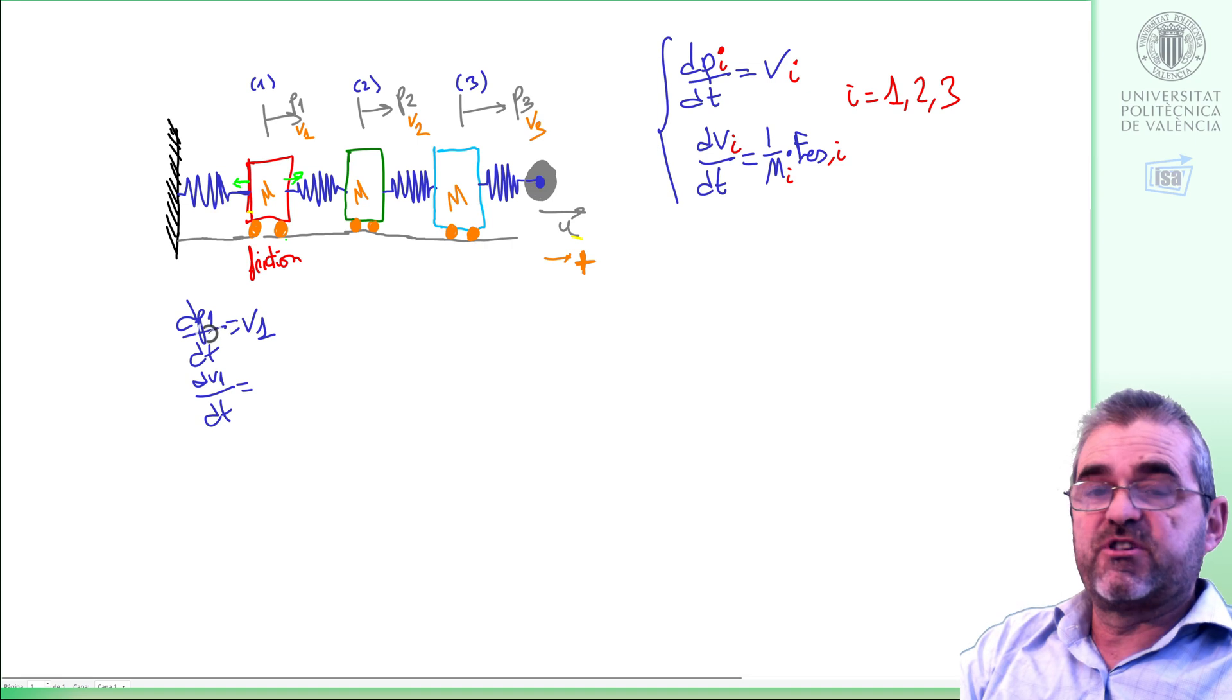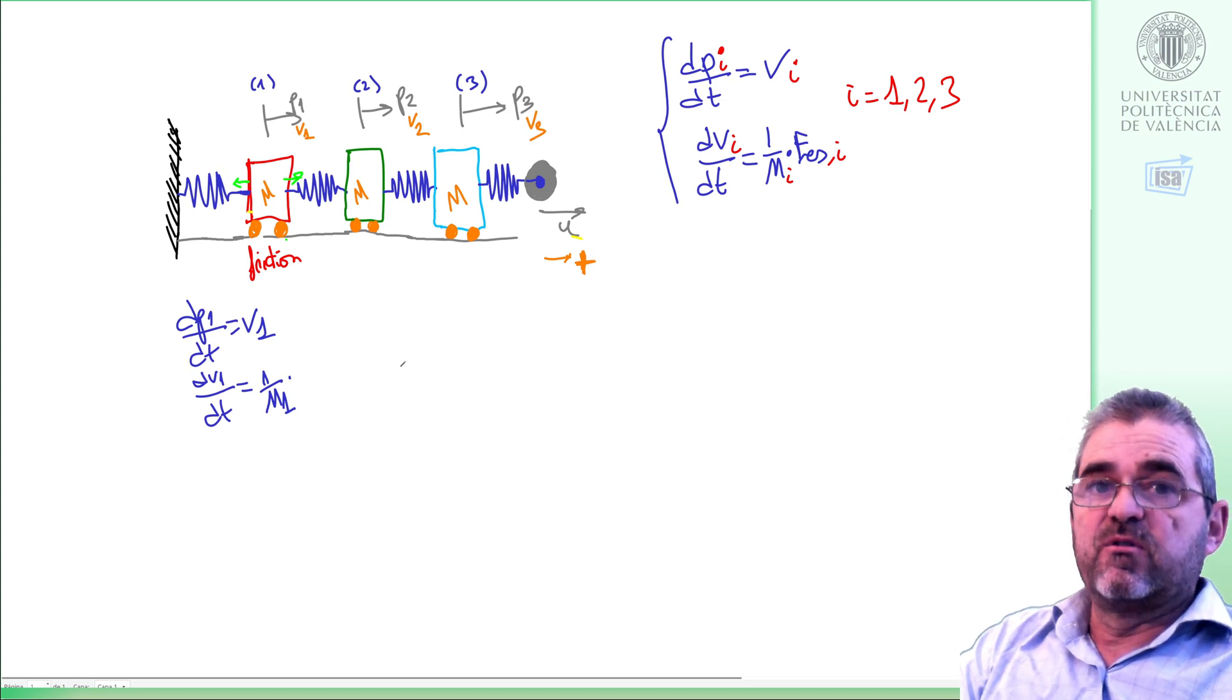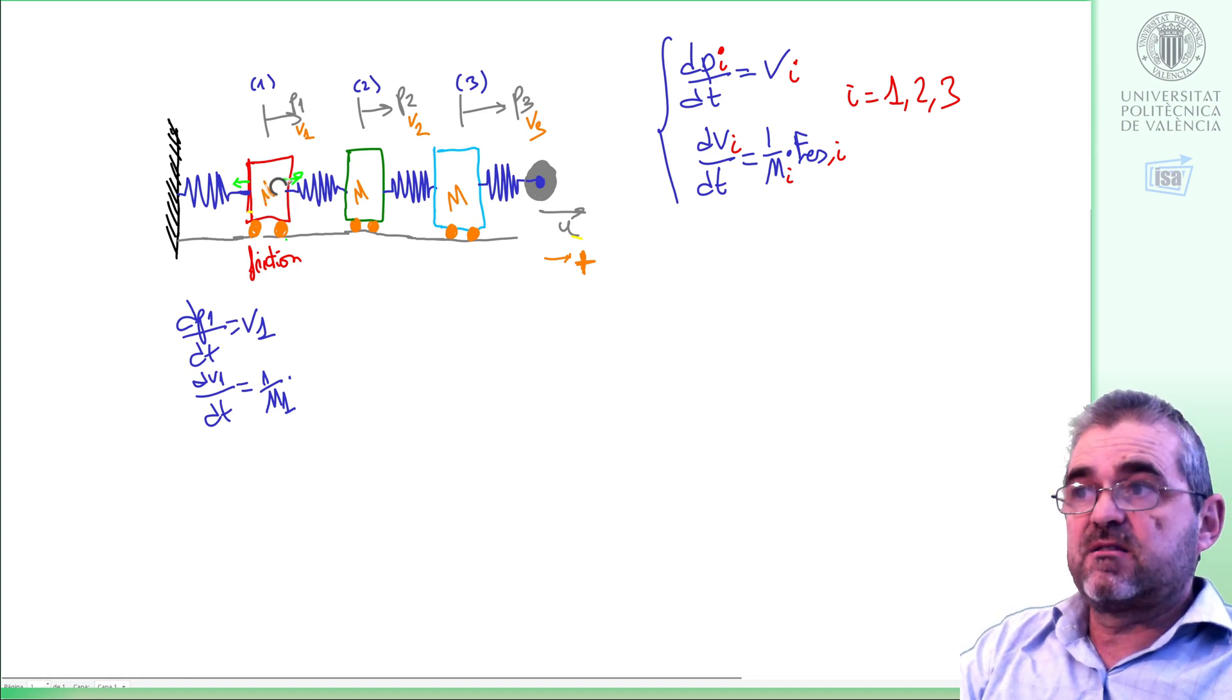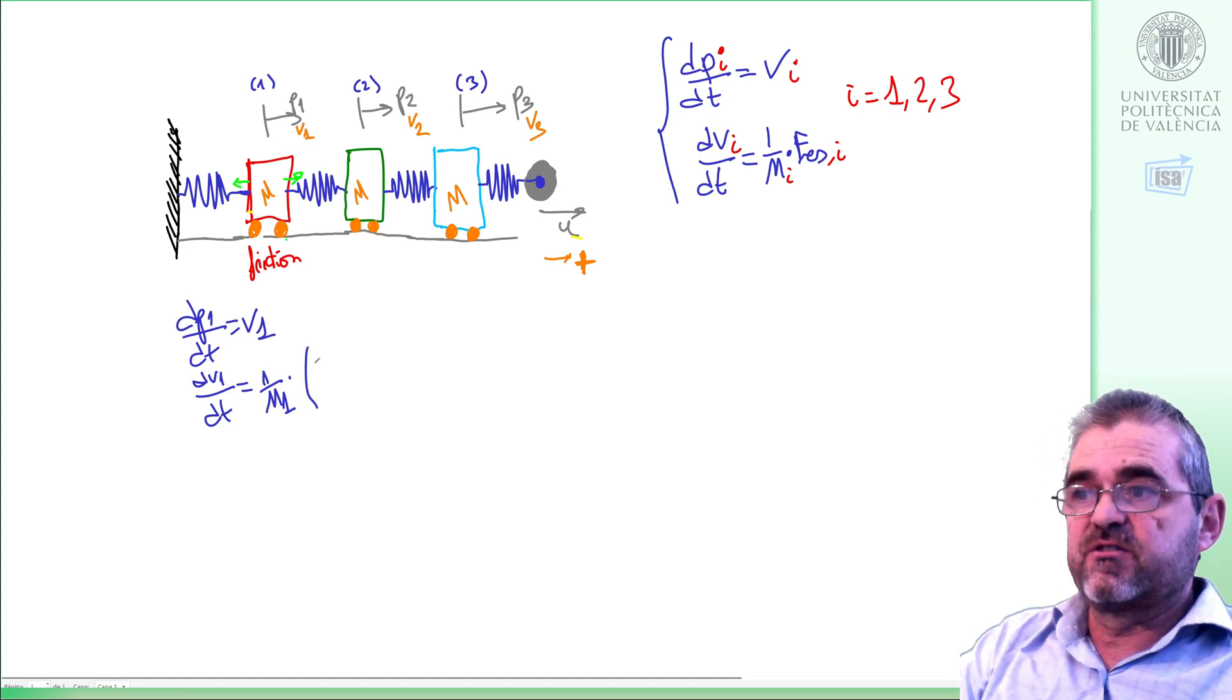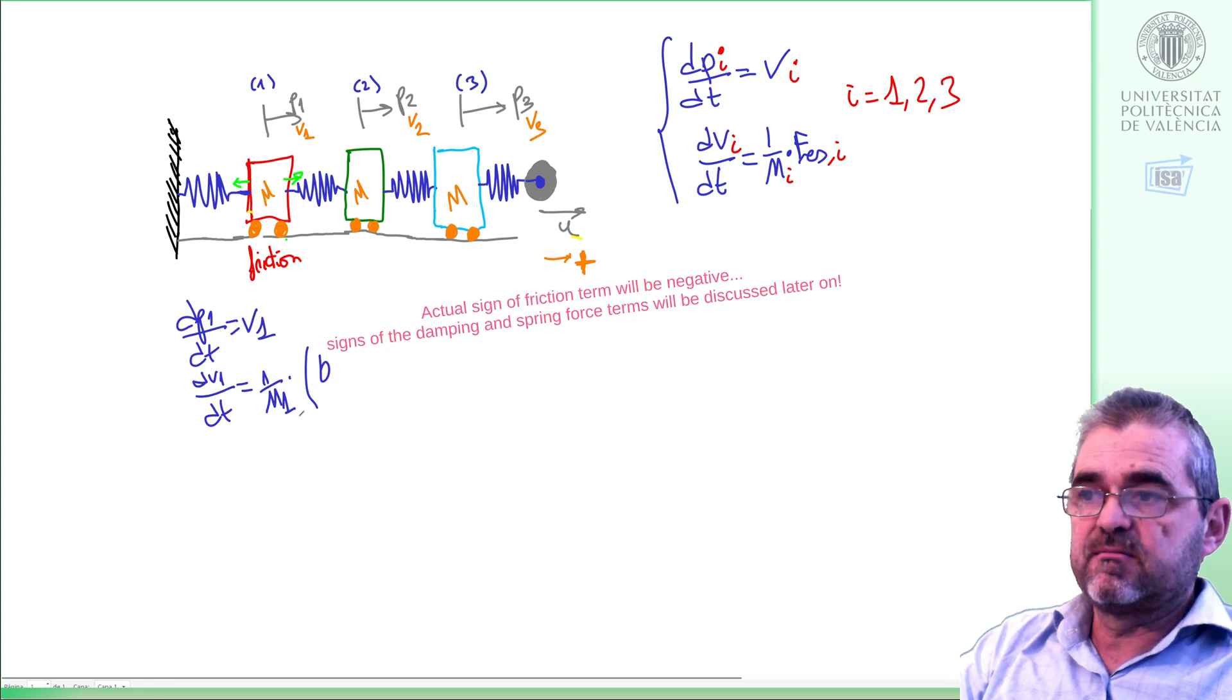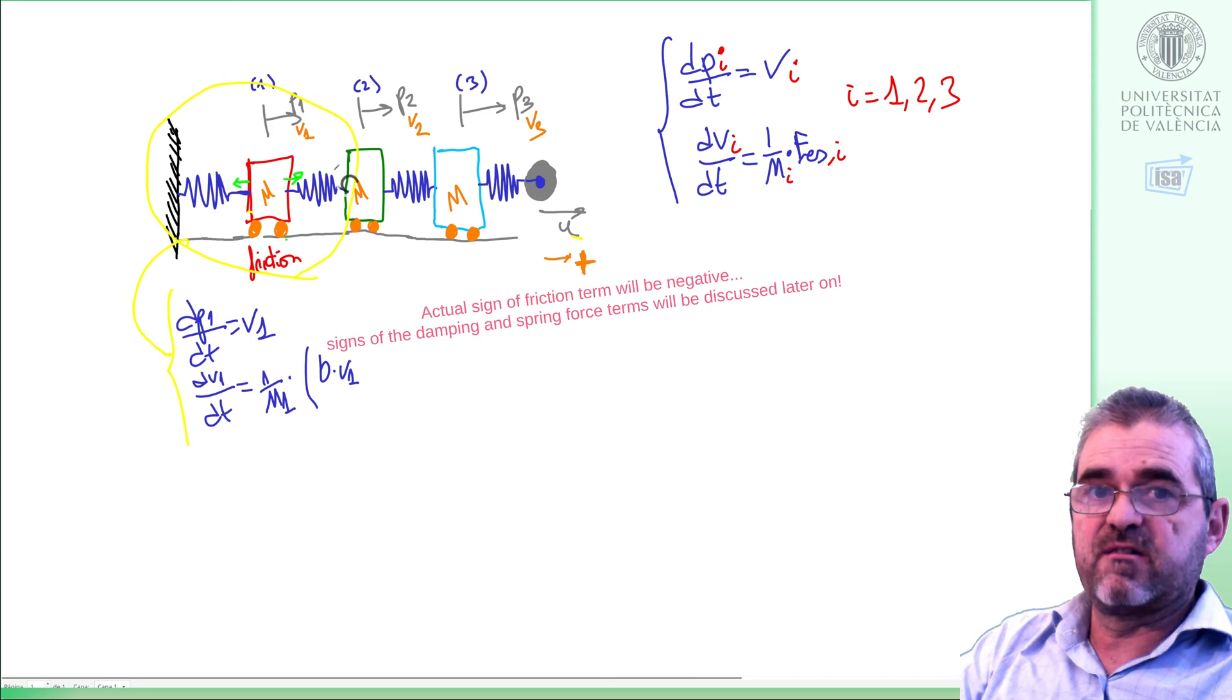The derivative of position 1 is speed 1, and the derivative of speed 1 will be 1 over mass 1 times the resulting force, but I will directly write it in here to avoid introducing more letters in my model. The resulting force will be the sum of those from the springs the masses attached to, plus the friction terms. So, if we assume linear friction, the friction force will be a friction coefficient B times speed 1. We are now considering this part of the system.